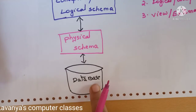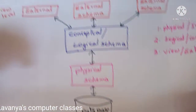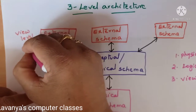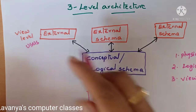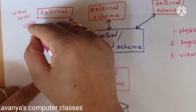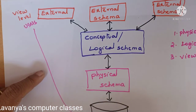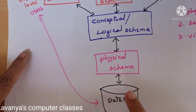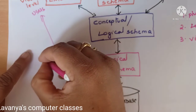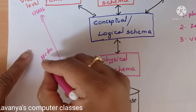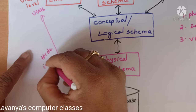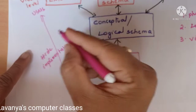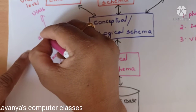Here is the diagram. Database means it is a collection of data, and here users are there. Users are using this database depending upon their requirement. That is why the external view has multiple views — this is also called view level. These users are using the database.